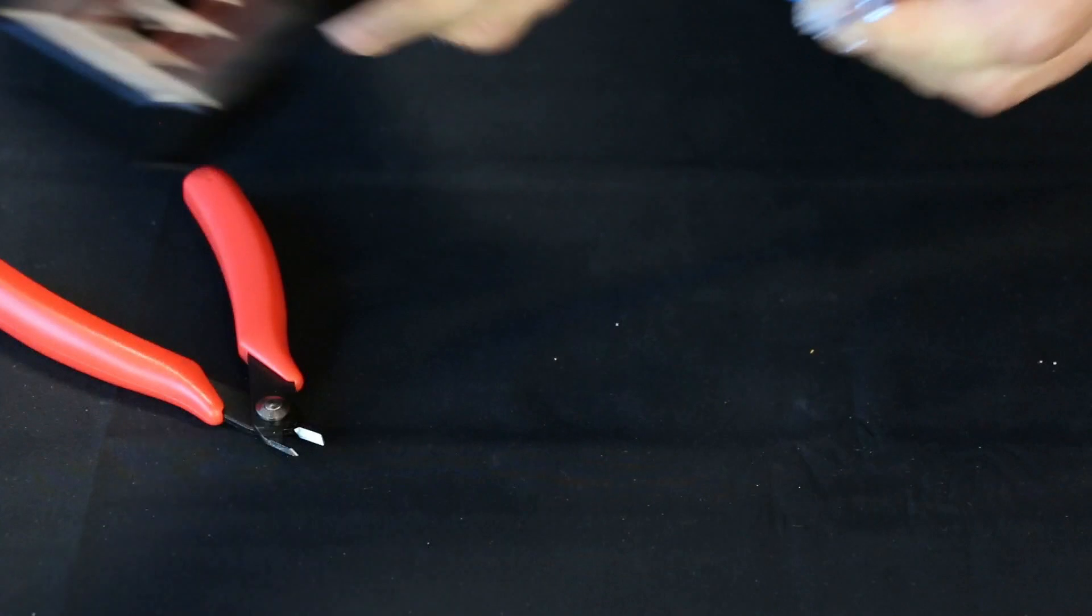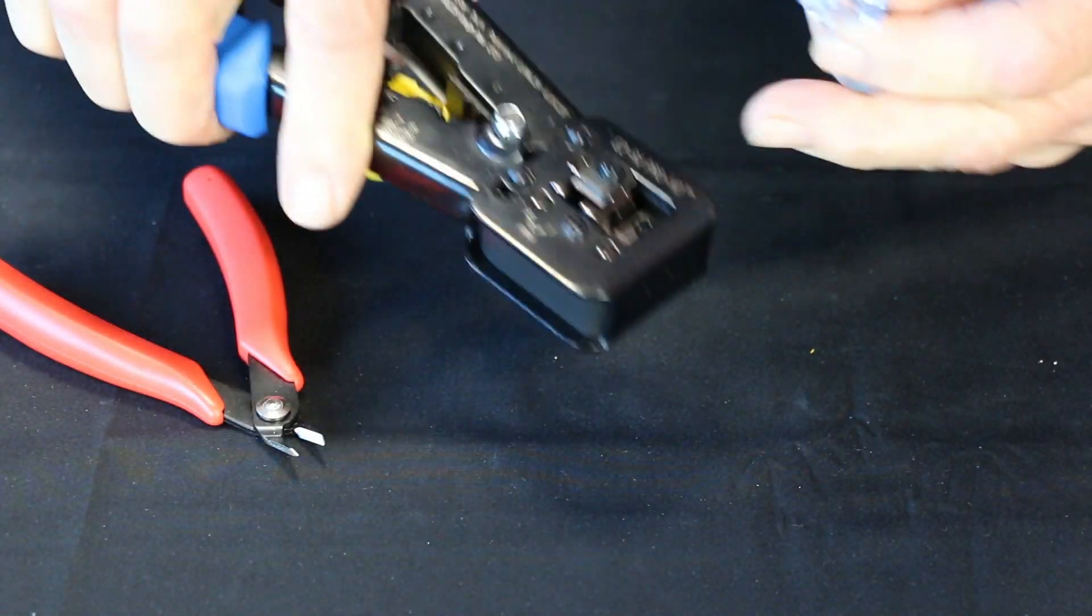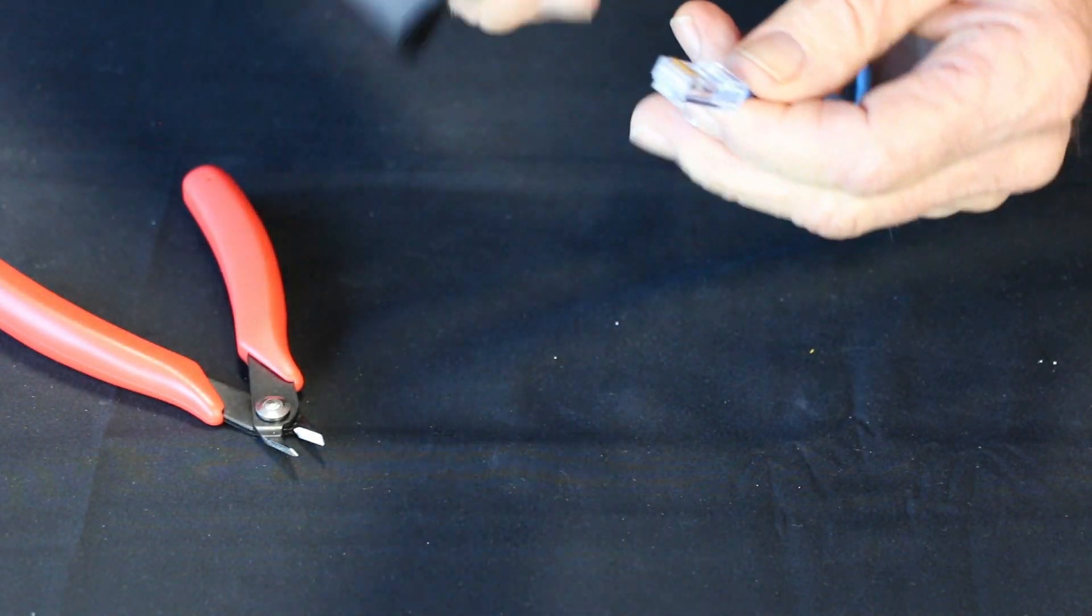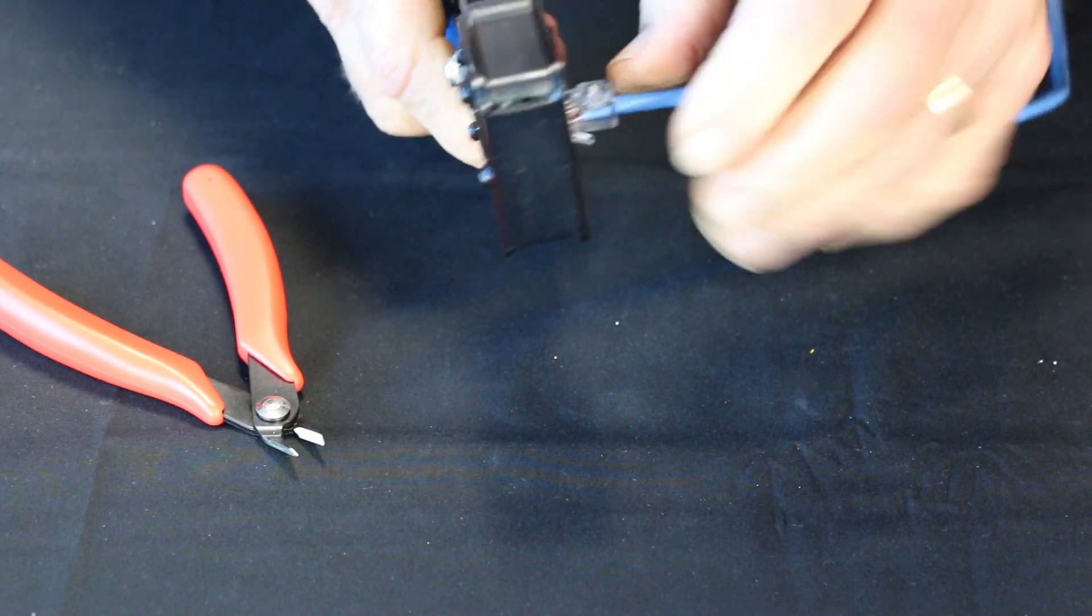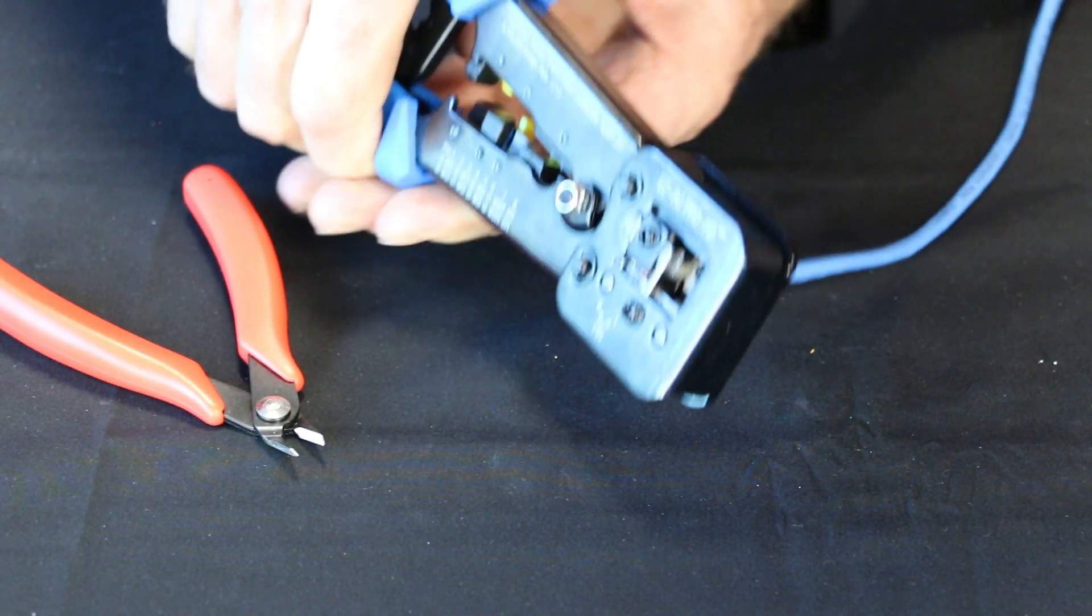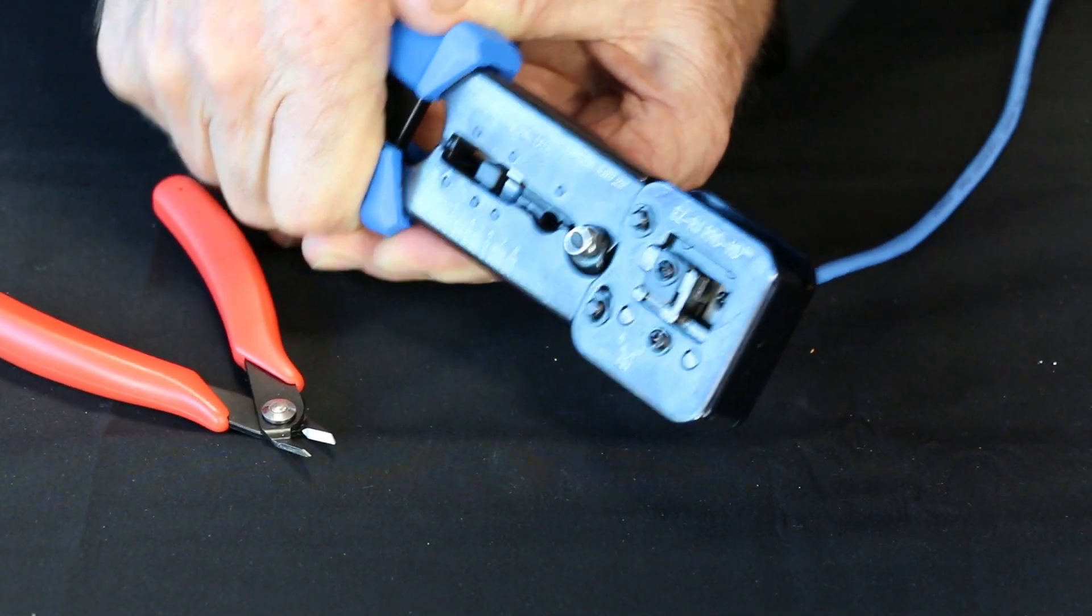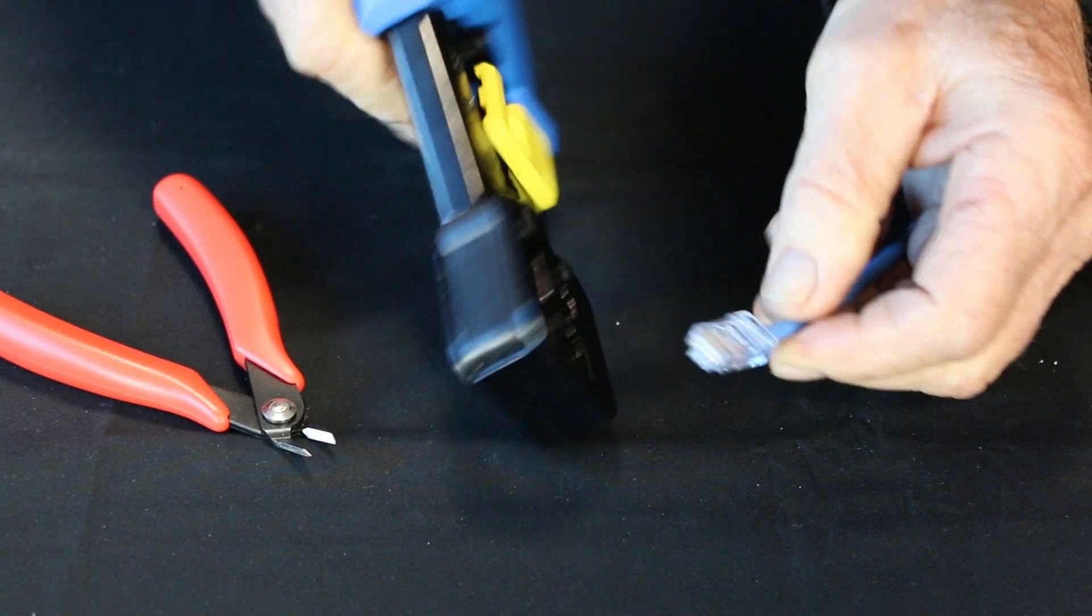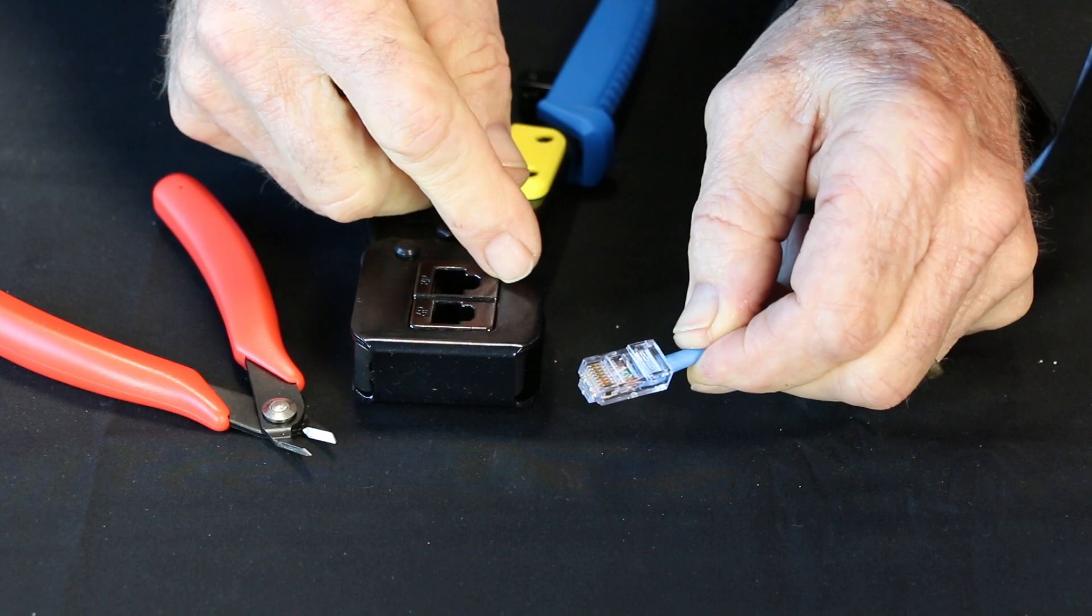And then take your easy tool, crimp tool, and of course the blade's not going to be doing anything because they're not sticking out. And then when you insert it, captivate it, crimp it, and there you go. Totally nice clean flush cut.